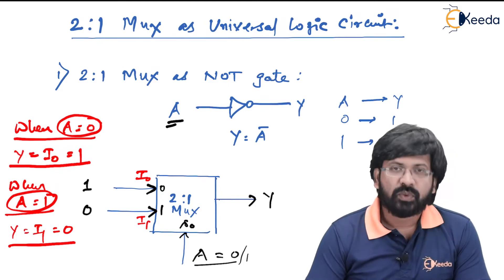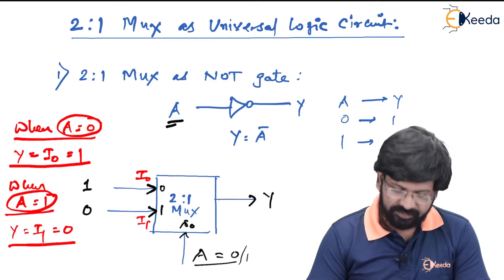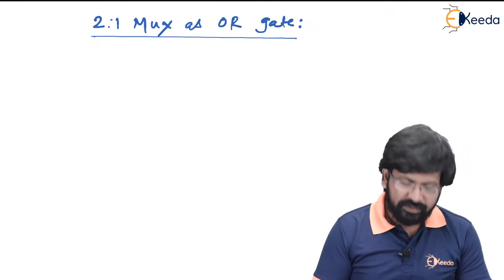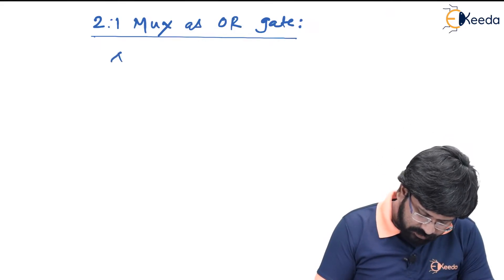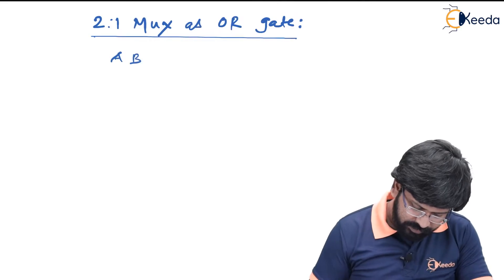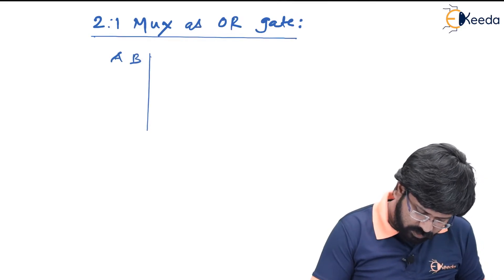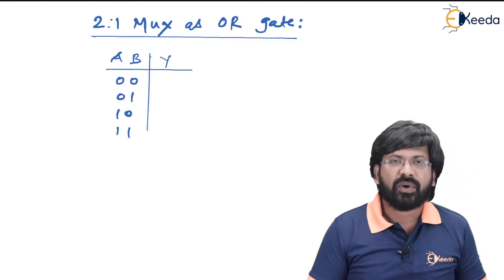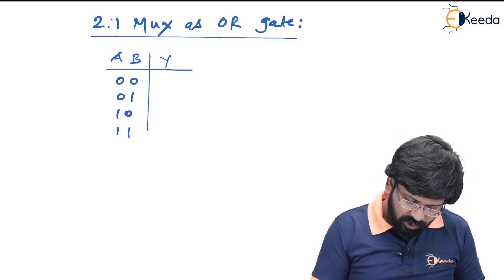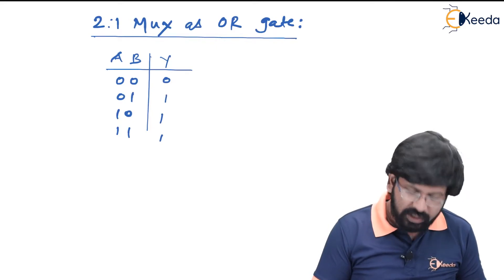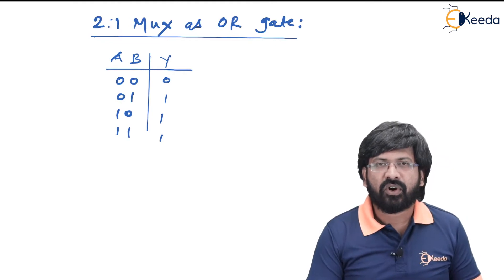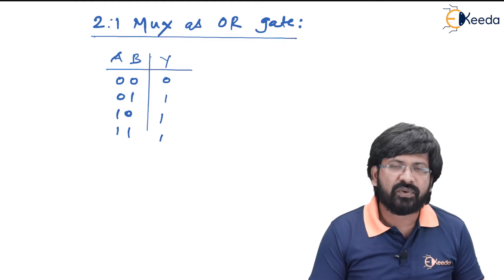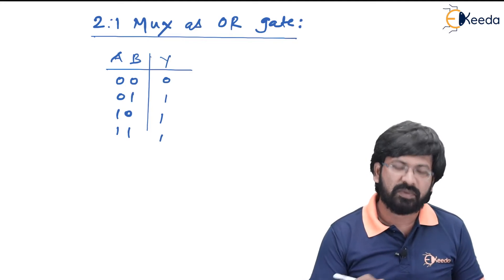Let us go on implementing 2-to-1 multiplexer as OR gate as well as AND gate. When I want an OR gate, first I will have the OR gate truth table with inputs A and B and output Y. The possible combinations of A and B are 00, 01, 10, 11. For 00 in OR gate output is 0, for 01 you get 1, for 10 you get 1, and for 11 you get 1. For OR gate, when one of the inputs is equal to 1 output is 1, and when both inputs are 1 output is also 1.